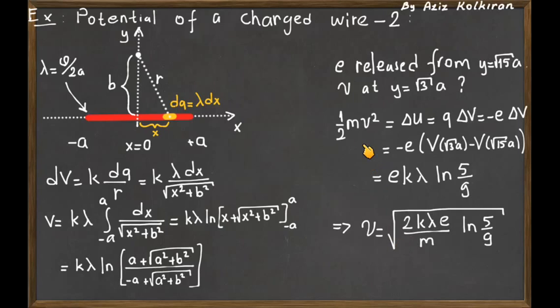This will equal the speed expressed as, when we put everything in this energy equation, square root of 2k lambda e divided by the mass of the electron times the natural logarithm 5 divided by 9.